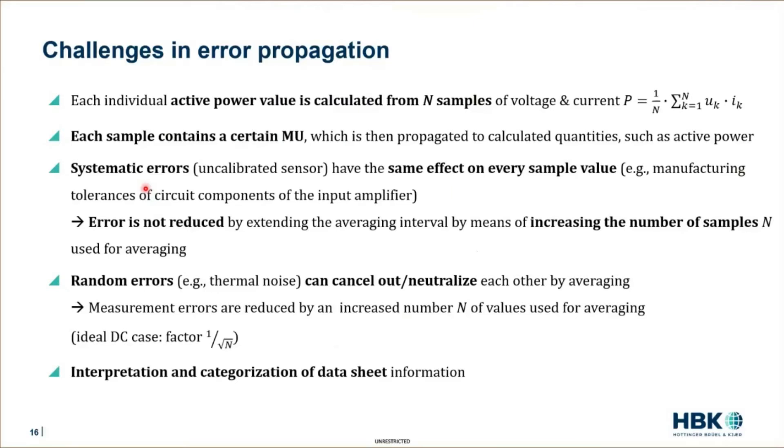And therefore, it cannot be compensated by increasing the number of samples we use for averaging. That's typical for systematic errors. We cannot make them smaller by increasing the number of samples which we use for averaging.